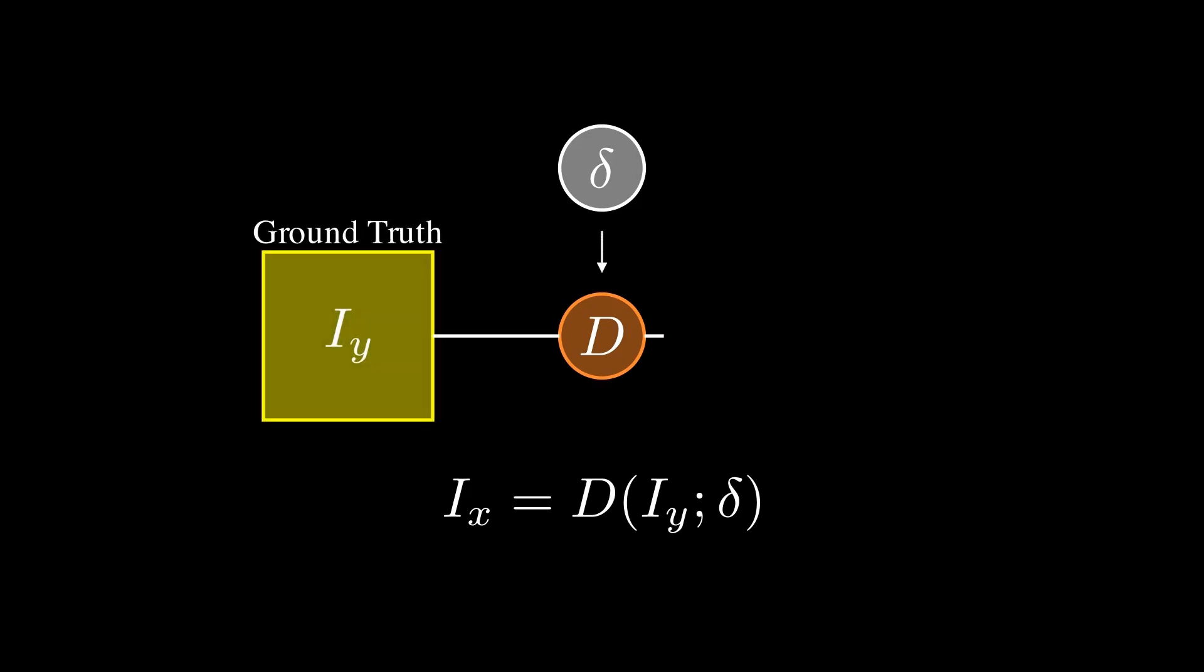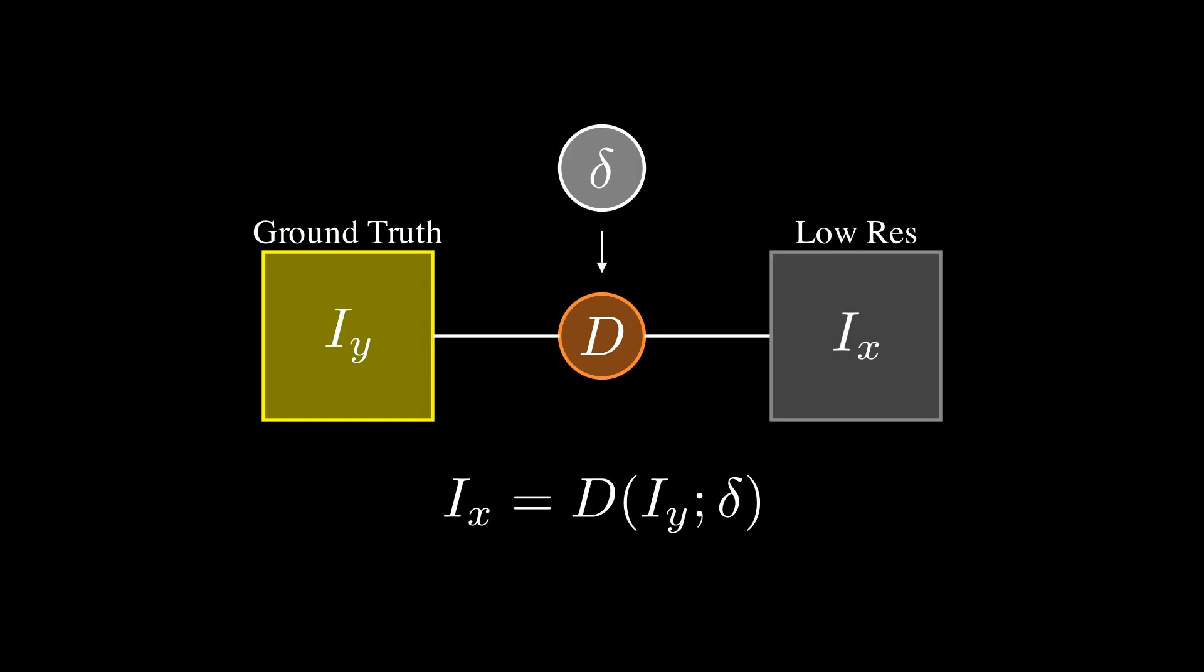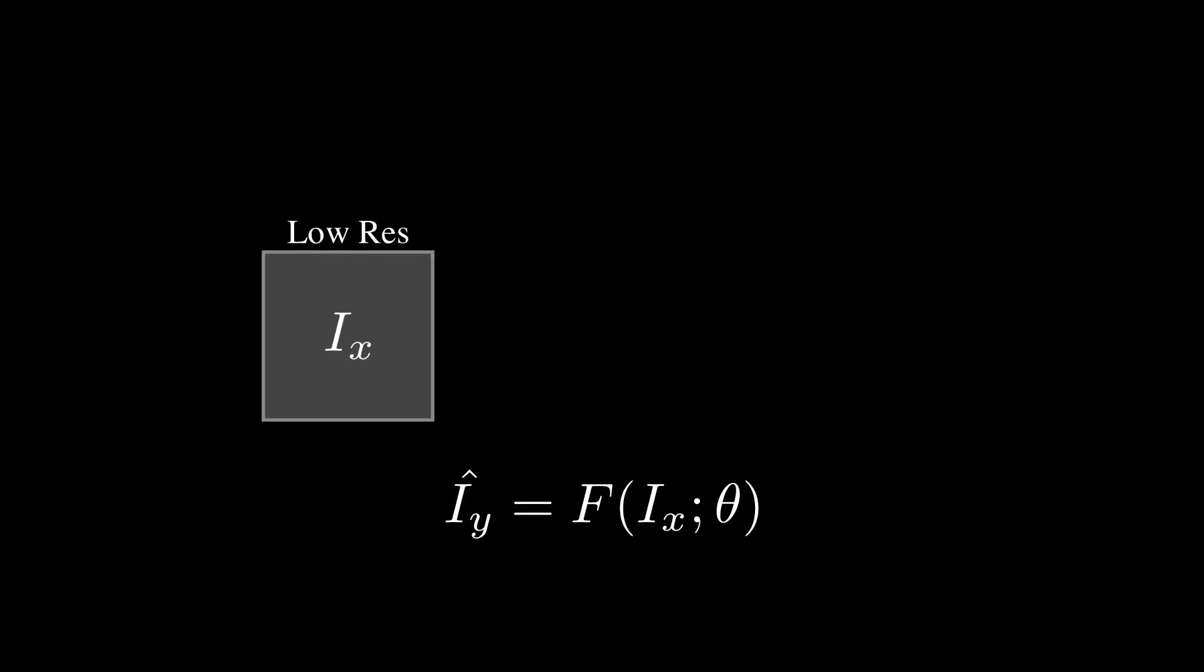Essentially, this defines a mapping from high to low-resolution, which is usually an unknown process. Conversely, we can define a mapping from low to high-resolution as follows. Here, I hat y is the high-resolution image recovered from its low-resolution counterpart, Ix, via a super-resolution model F, whose job it is to recover the missing information. Theta represents the parameters of the model F, which, as we will see later, are the product of using machine learning.